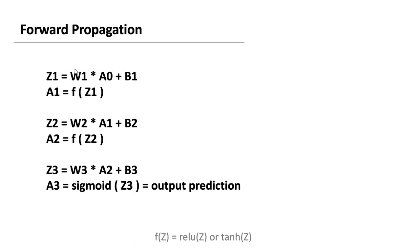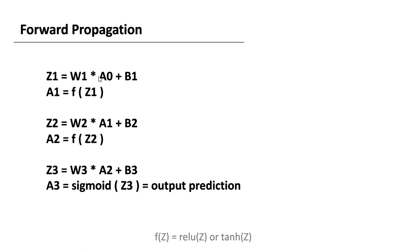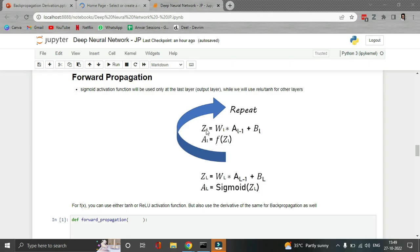For forward propagation, the equations for our three-layer example are: Z1 = W1 · A0 + B1 (where A0 is X, the input dataset), and A1 = f(Z1) where f can be ReLU or tanh. Similarly Z2 = W2 · A1 + B2, and A2 = f(Z2). The pattern is: Z_l = W_l · A_{l-1} + B_l, and A_l = f(Z_l). This can be repeated for all layers.